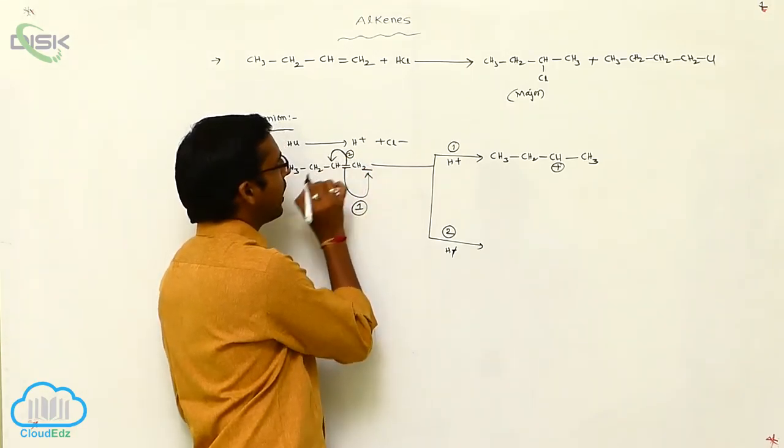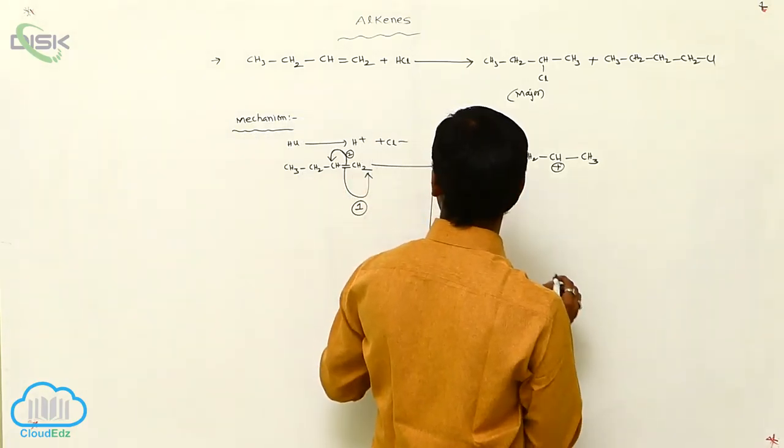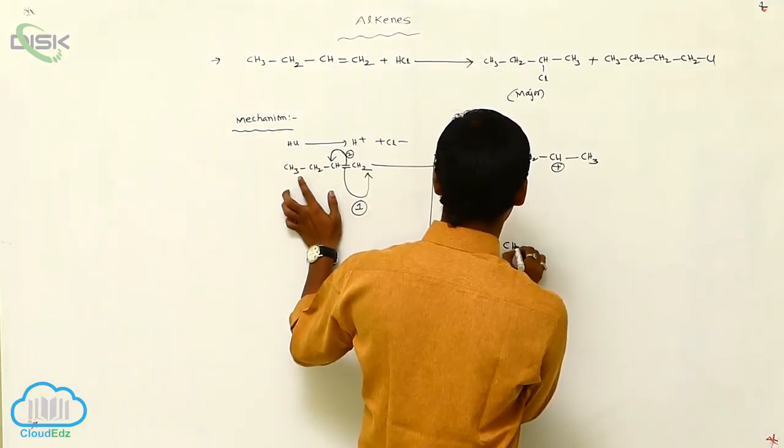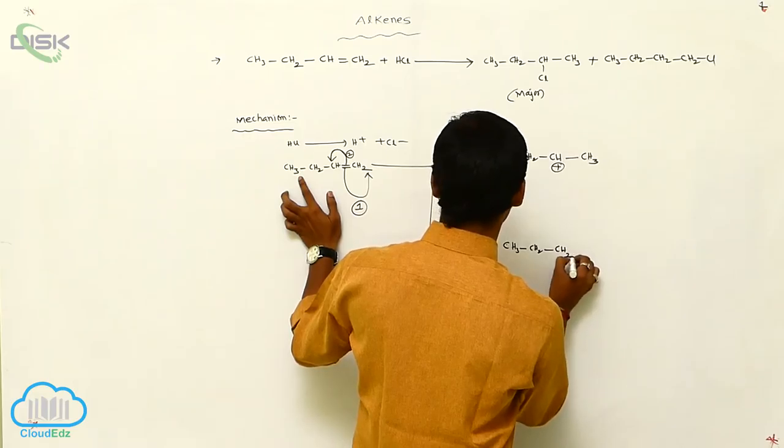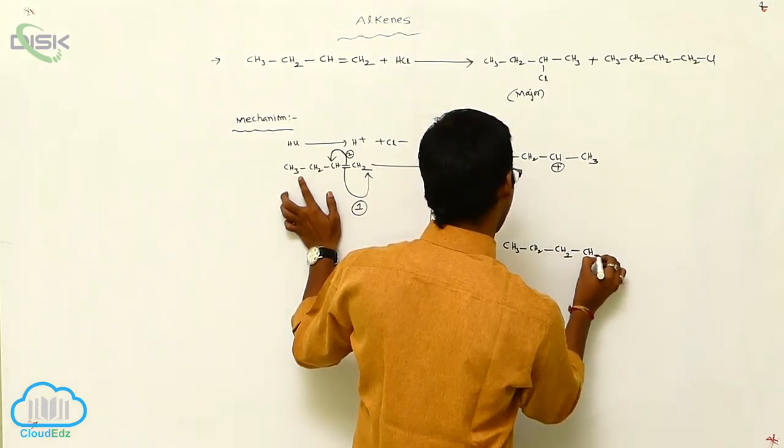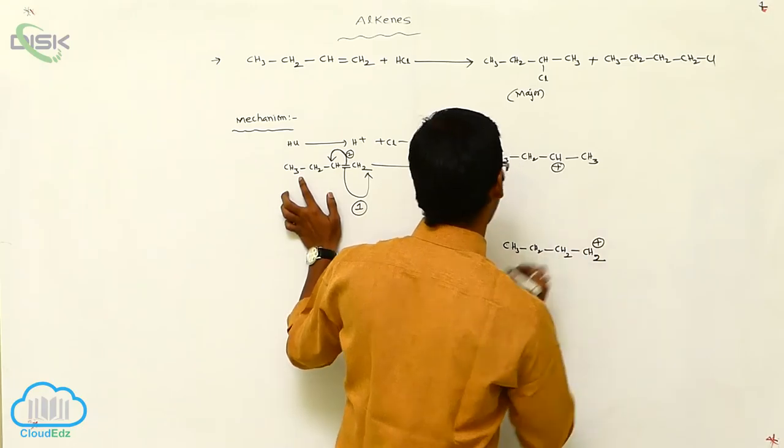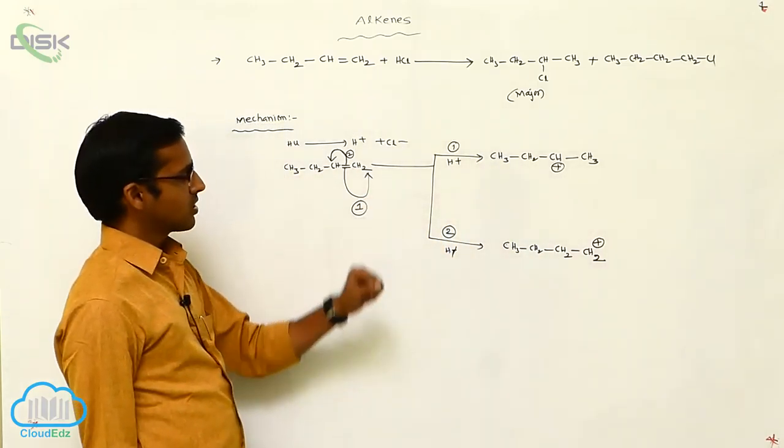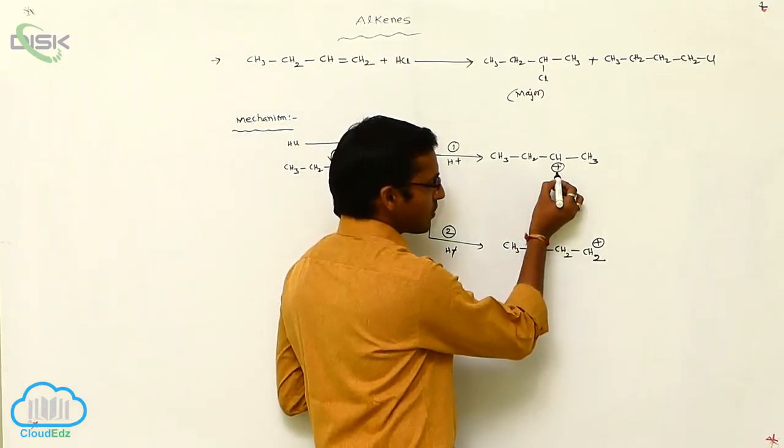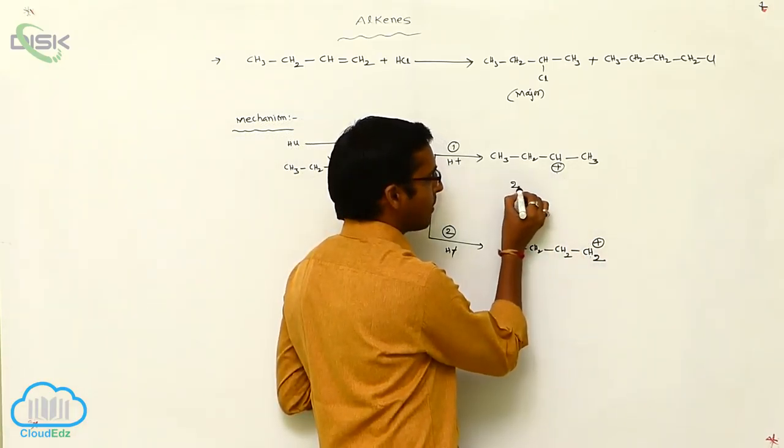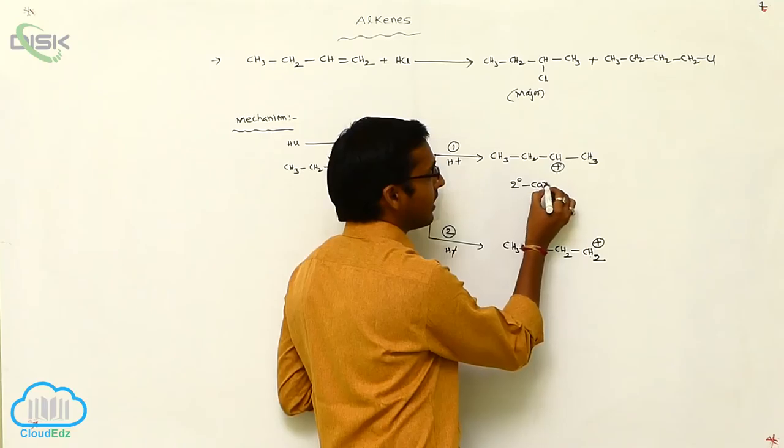This is shifted to here. Whenever this is shifted, we are getting a positive charge, CH₃⁺. Because it is abstracting one proton, that is converted to CH₃. Here, addition of H⁺. Whenever this is shifting here, you are getting a positive charge here and negative charge. The negative charge is abstracting one proton.